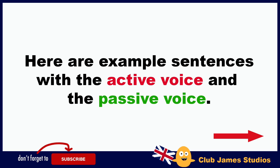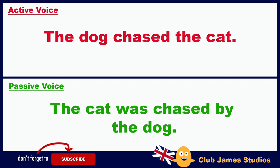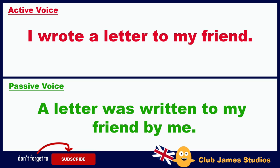Here are example sentences with the active voice and the passive voice. She opened the window. / The window was opened by her. The dog chased the cat. / The cat was chased by the dog. They found the treasure. / The treasure was found by them. I wrote a letter to my friend. / A letter was written to my friend by me.